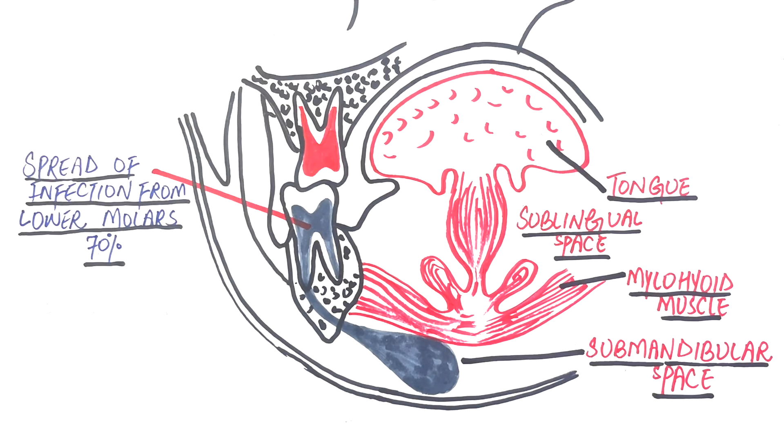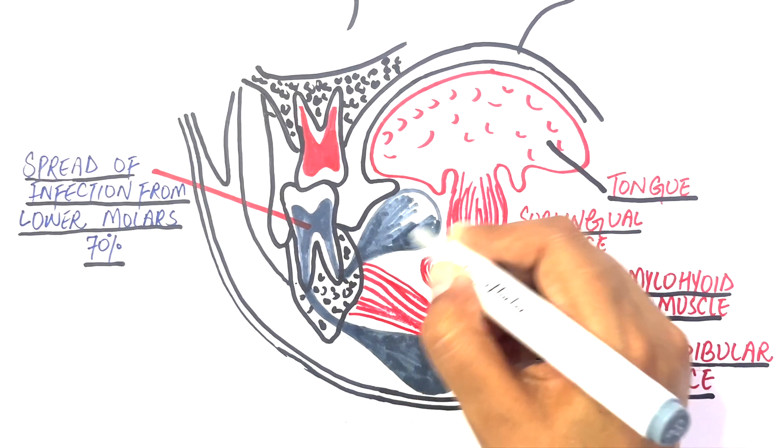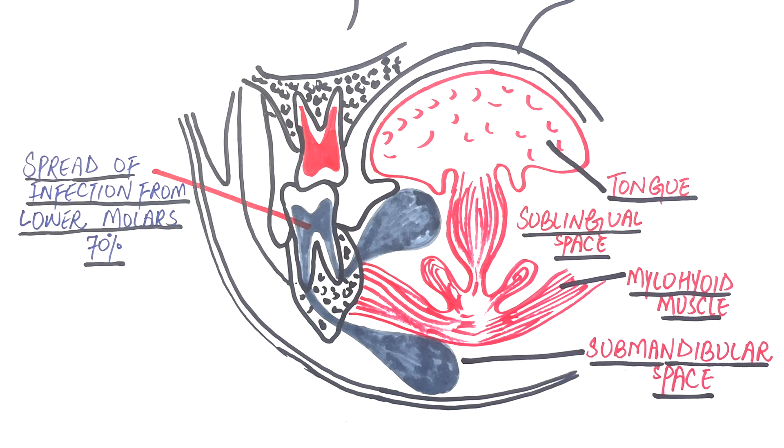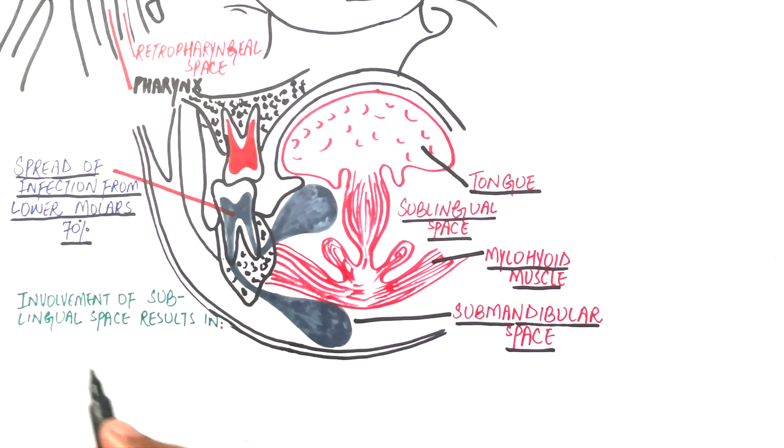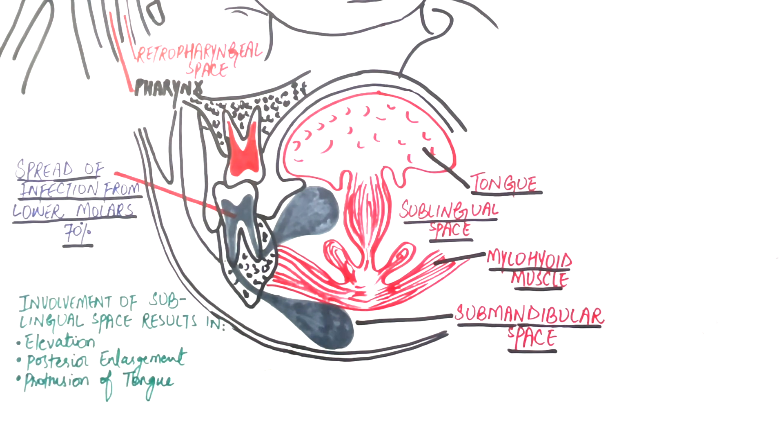Other spaces like sublingual and submental spaces might also be involved. Involvement of the sublingual space results in elevation, posterior enlargement, and protrusion of the tongue.